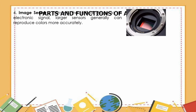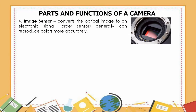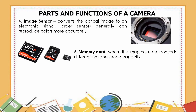Number four is the image sensor — it converts the optical image to an electronic signal. Larger sensors generally can reproduce colors more accurately. Number five is the memory card — where images are stored. It comes in different size and speed capacities.